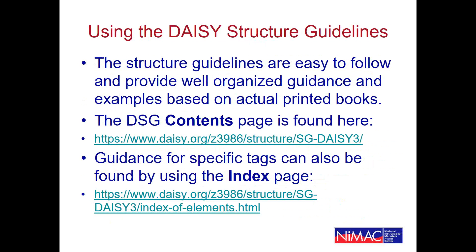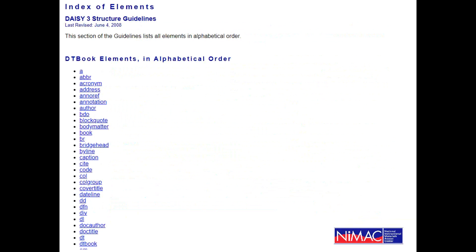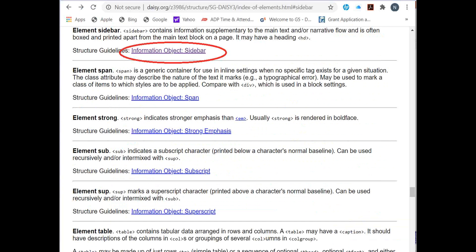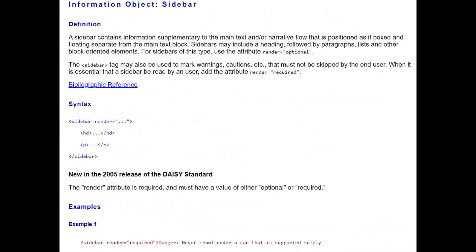In terms of using the DAISY Structure Guidelines, if you haven't utilized the resource before — or it's been a while — there are a couple of ways to use it. It is found on the web with a contents page for the overall document, and there's also an index for specific tags. I've included both links because I find both useful in different situations. In the index, if you click on a tag such as 'sidebar,' it takes you to a brief definition and a link to the details.